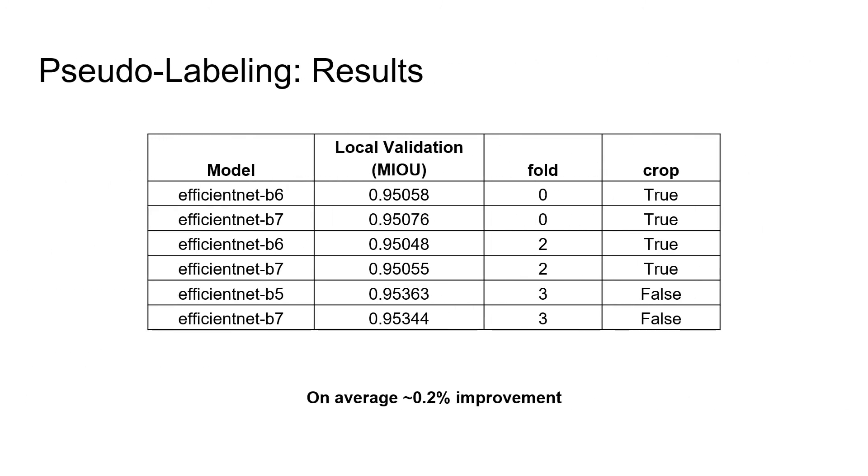Here are the results of pseudo-labeling. As you can see, on average there is 0.2% improvement compared to training only on labeled data.